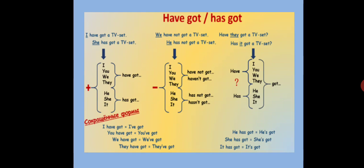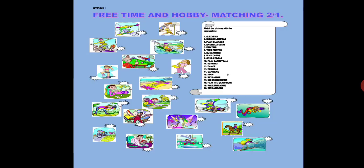In question form, the auxiliary verb have or has comes before the subject. Have I got, have you got, have we got, have they got, or in the third person, has he got, has she got, has it got. If you understand, let's move to the tasks.